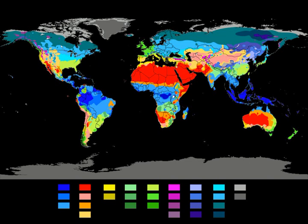The Köppen climate classification divides climates into five main climate groups, with each group being divided based on seasonal precipitation and temperature patterns. The five main groups are A tropical, B dry, C temperate, D continental, and E polar. Each group and subgroup is represented by a letter.